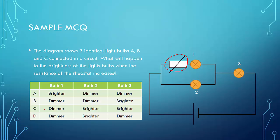The answer is D. Bulb 1 will be dimmer, bulb 2 will be brighter, and bulb 3 will be dimmer.